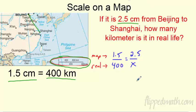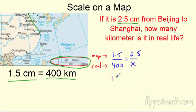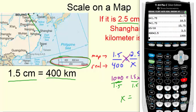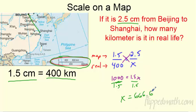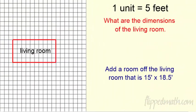Cross-multiplying gives 400 times 2.5 equals 1.5 times x, so 1000 equals 1.5x. Dividing both sides by 1.5 gives approximately 666.6 repeating kilometers. Make sure you label your answer — that's the real-life distance in kilometers from Beijing to Shanghai.